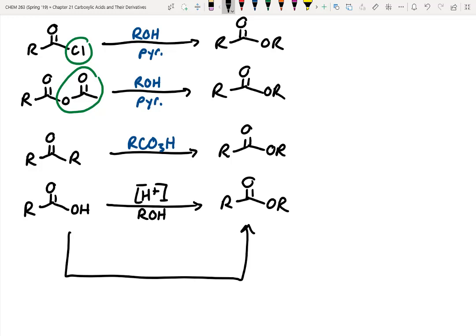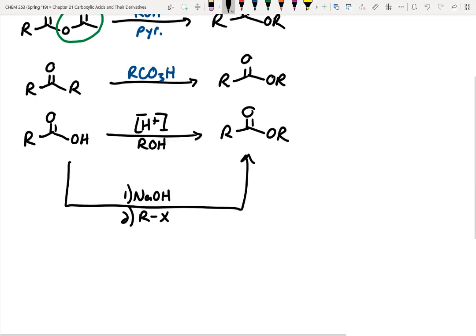Another way is to deprotonate the OH using sodium hydroxide, giving a negative charge — that's a decent enough nucleophile to do SN2 chemistry, which means we'd need some sort of alkyl group with a leaving group, so we'd want RX. One important thing to note: not only do these reagents give you cancer, but you have to be careful about the size of that R group — it needs to be unhindered. The carboxylate salt isn't a very good nucleophile because that negative charge is delocalized, so we need our electrophile to be a really, really good electrophile.